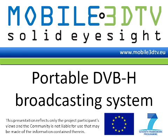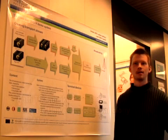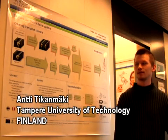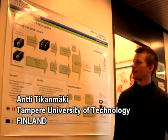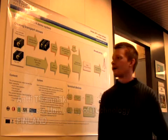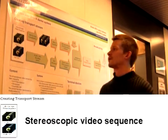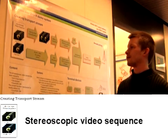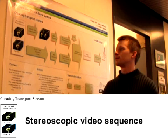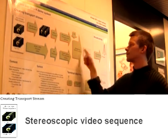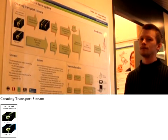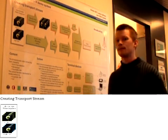I'll introduce you to our mobile 3D TV broadcast system. It uses DVB-H technology as the transmission channel and our input format is stereoscopic video. We transmitted that in two different formats which are finally multiplexed together in the same transport stream.